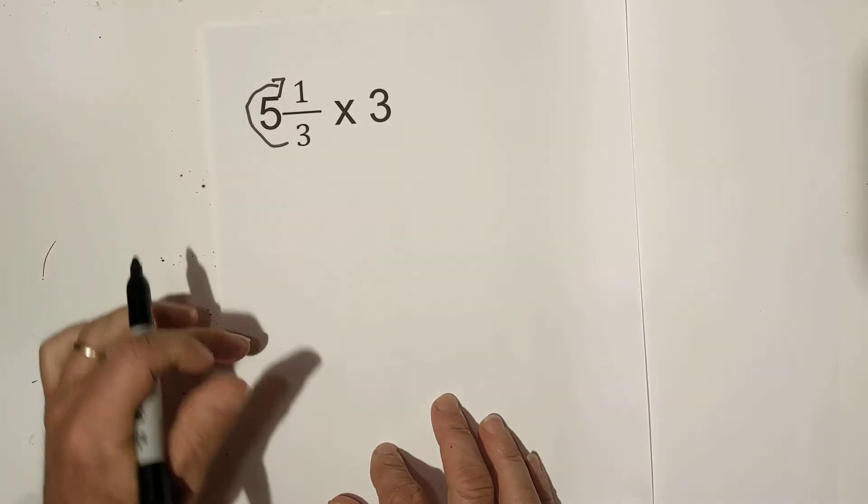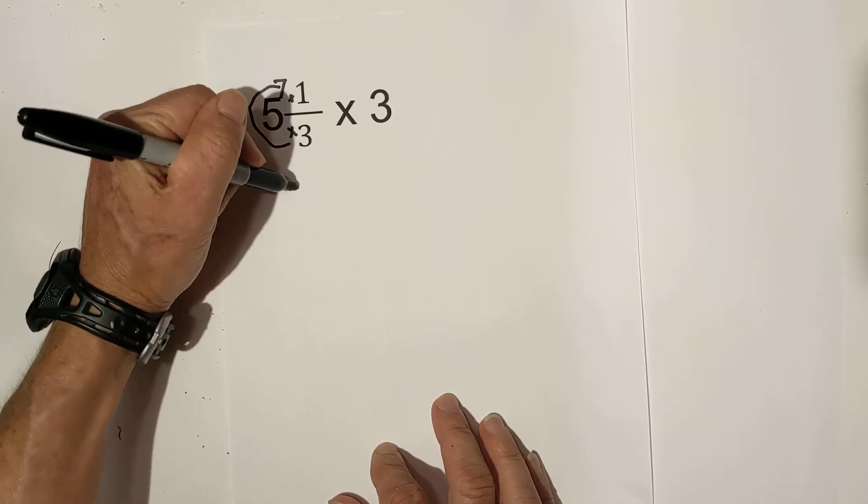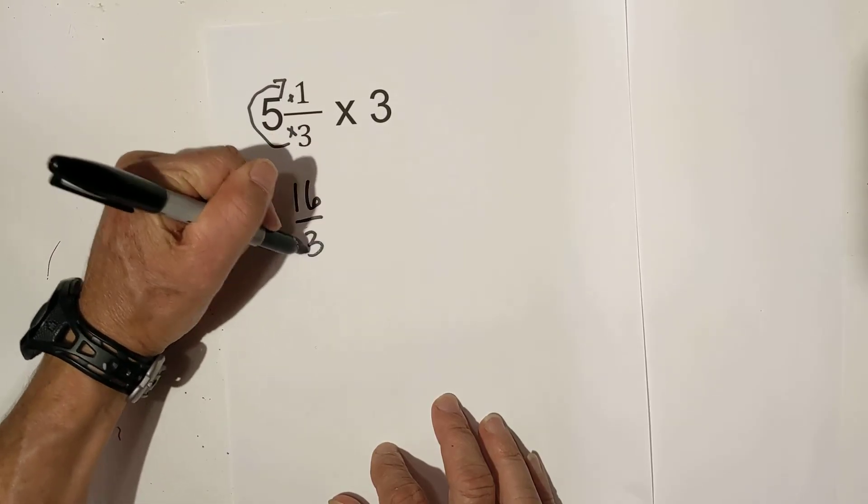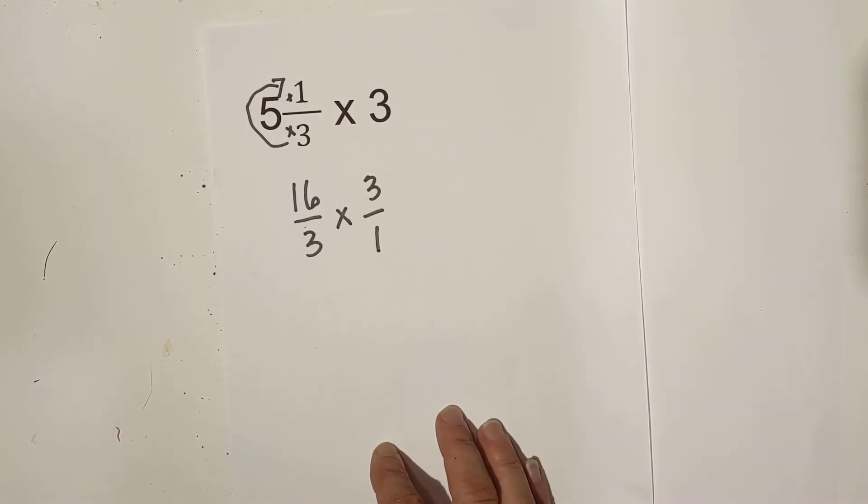Remember, step 1 is convert it to an improper fraction. Multiply then add. 3 times 5 is 15 plus 1 is 16 over 3 times 3 over 1.